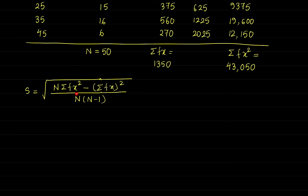Now let us substitute all the values. The total frequency value N is equal to 50. This is a standard deviation question for a frequency distribution.